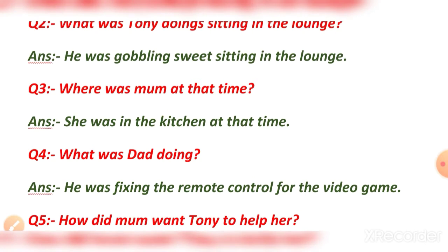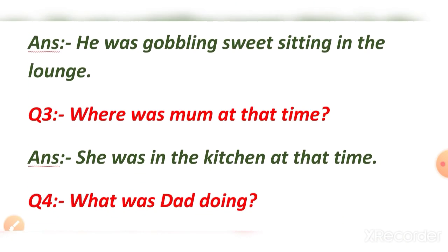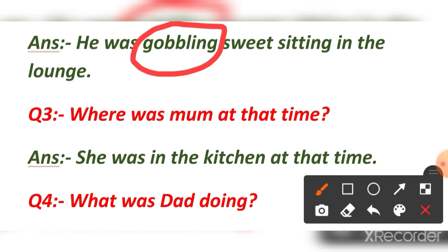Question number 2: What was Tony doing sitting in the lawn? The answer is he was gobbling sweets sitting in the lawn. Gobbling means eating greedily — he was eating sweets sitting in the lawn.